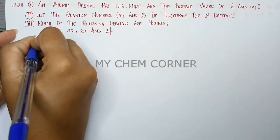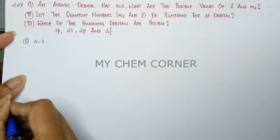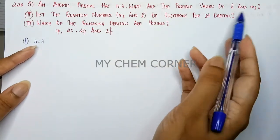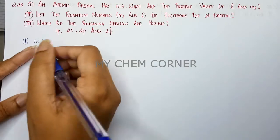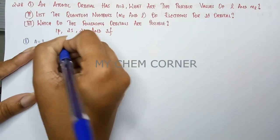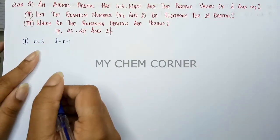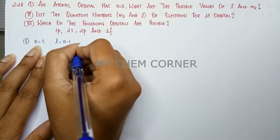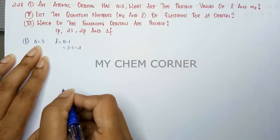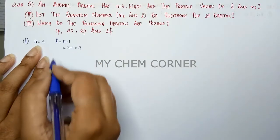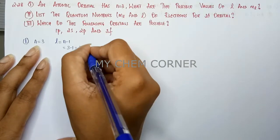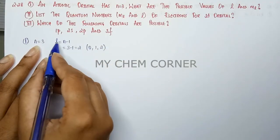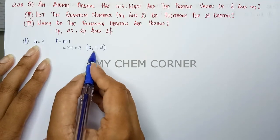For the first part, n is equal to 3. From n equal to 3, I need to find the l value. The formula is l goes from 0 to n minus 1. With n equal to 3, that gives up to 2, so the possible l values are 0, 1, and 2.